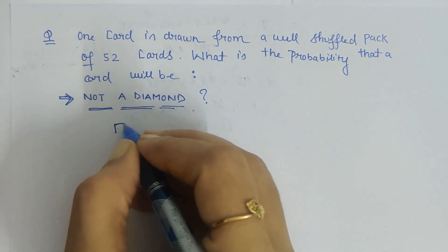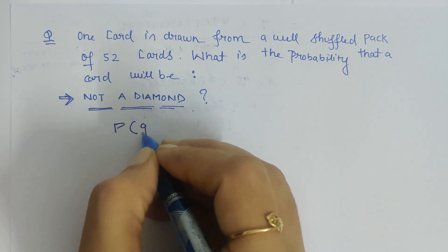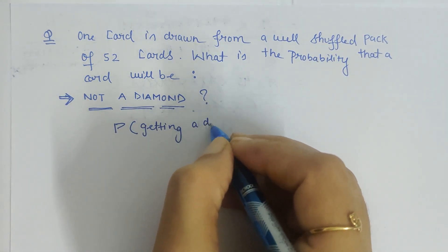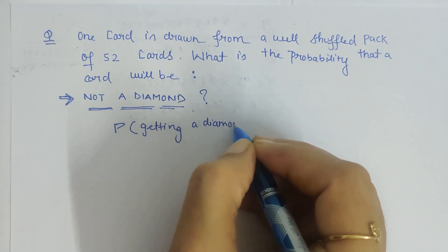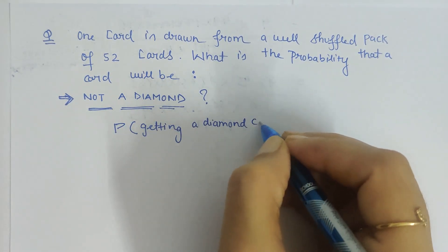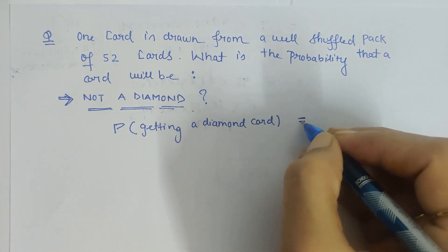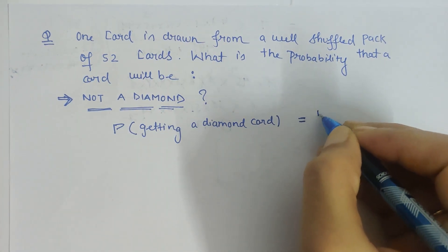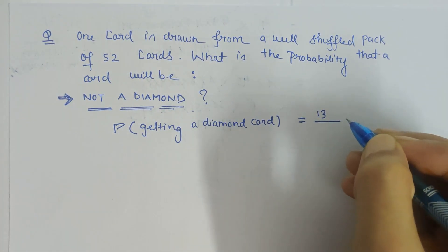For this, first we will find out what is the probability of getting a diamond card. So here, how many diamond cards do we have? There are 13 diamond cards. As we all know, hearts, clubs, spades, and diamonds - each are 13 in number out of the 52 cards.